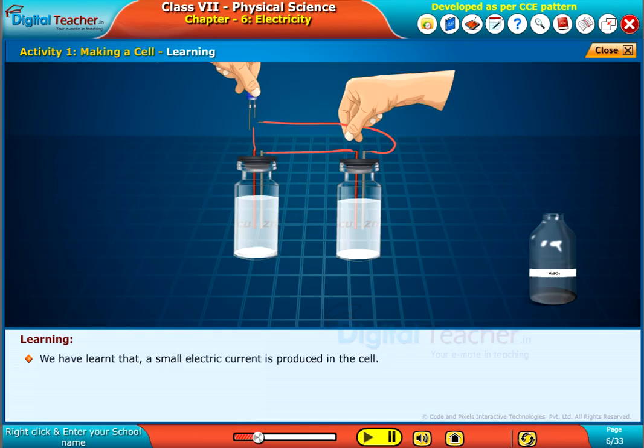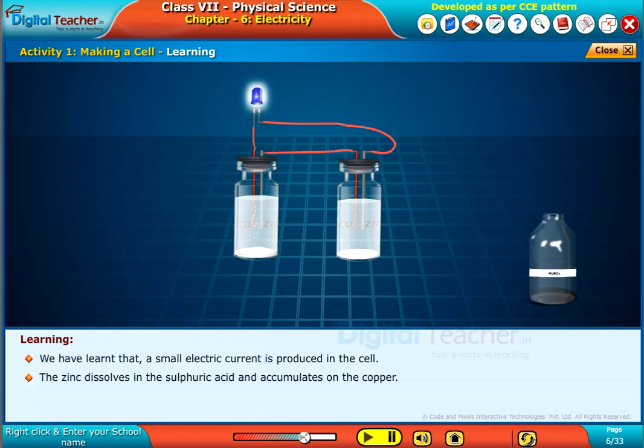We have learned that a small electric current is produced in the cell. The zinc dissolves in the sulfuric acid and accumulates on the copper.